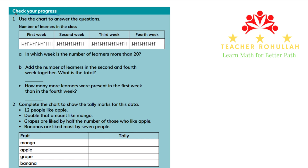The first question in this part says: use the chart to answer the questions. In this chart, we have the number of learners in the class in the first week, second week, third week, and fourth week. In the first week, we have 5, 10, 15, and 19 students — we have 19 here.